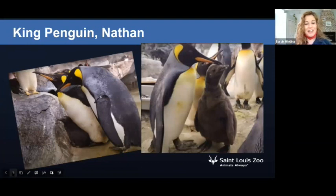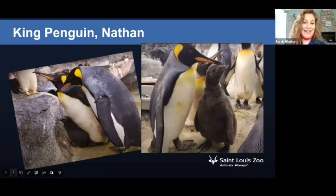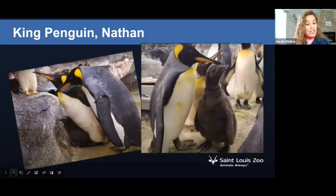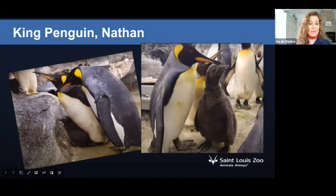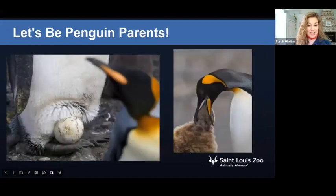Moving on to some of our bird friends at the St. Louis Zoo. We have a king penguin named Nathan who lives in our Penguin and Puffin Coast, and he has helped rear at least four chicks while living at the St. Louis Zoo. Male king penguins are great dads — they take turns with the mom to keep the egg warm until it hatches. They do this by passing the egg back and forth on their feet and keeping it warm underneath their bellies for 60 days until the egg is ready to hatch. Once the baby has hatched, the mom and dad will take care of it together and feed it by regurgitating food they've chewed.